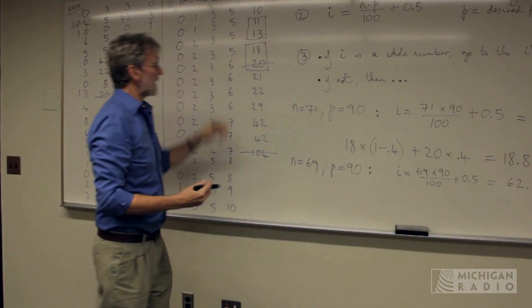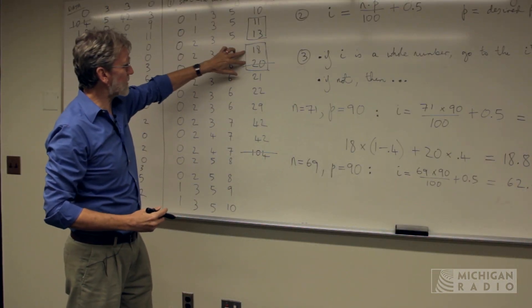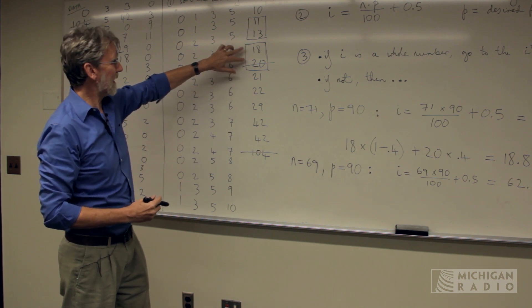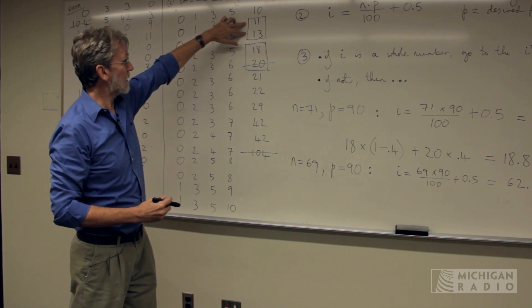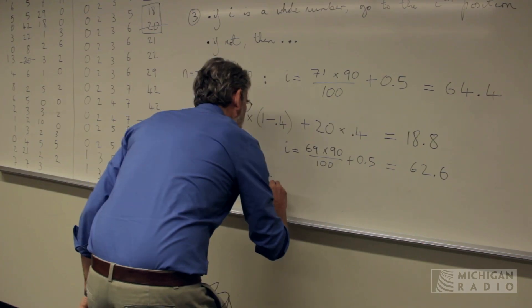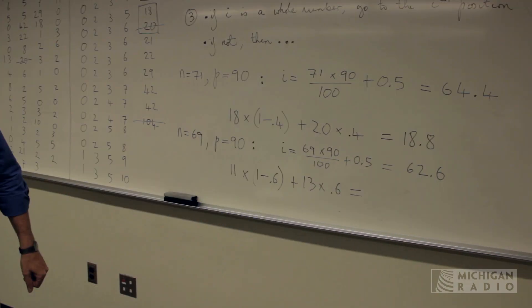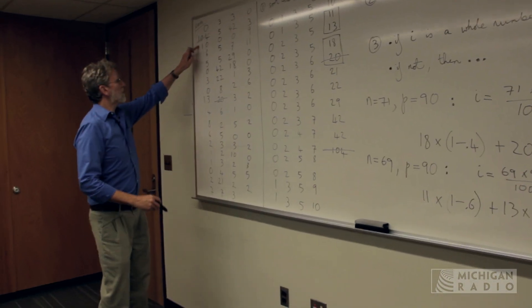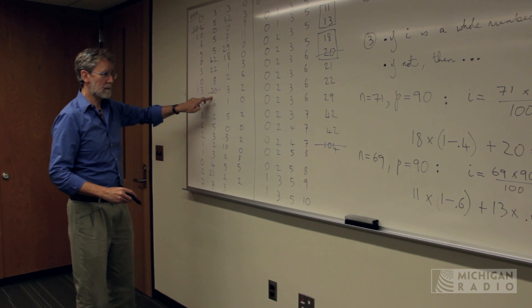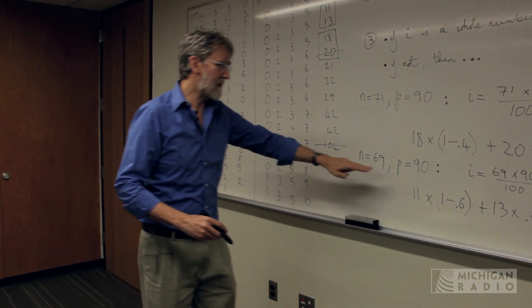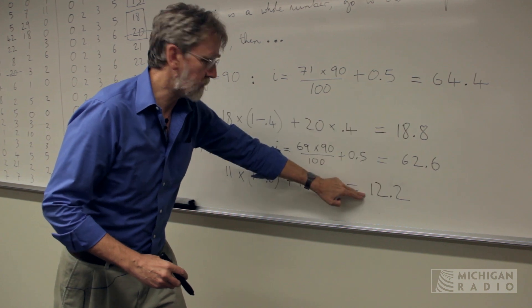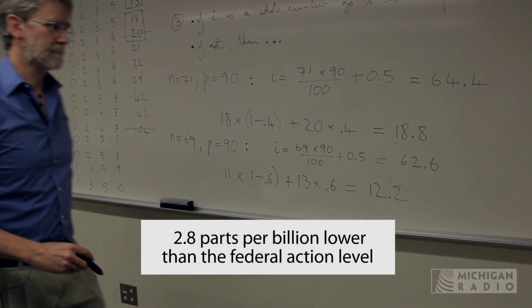Obviously, you can see what's happened. My median has shifted—not my median, my 90th percentile, I'm sorry—has shifted from this position down to this position. And now we can just do the details of the calculation. So by removing these two suspicious data points, our 90th percentile has moved from 18.8 down to 12.2.